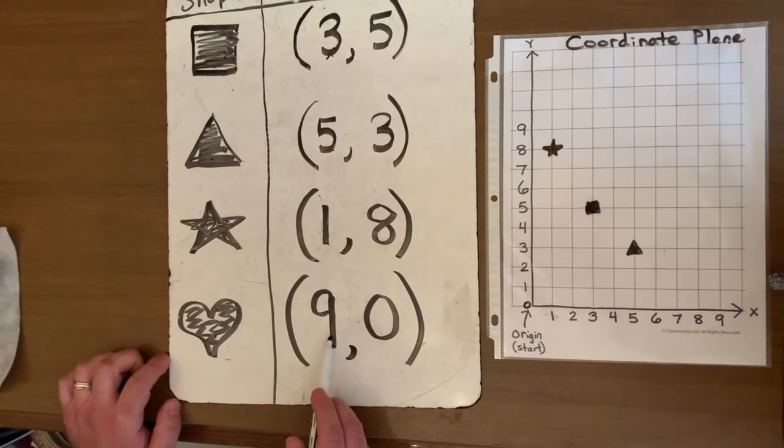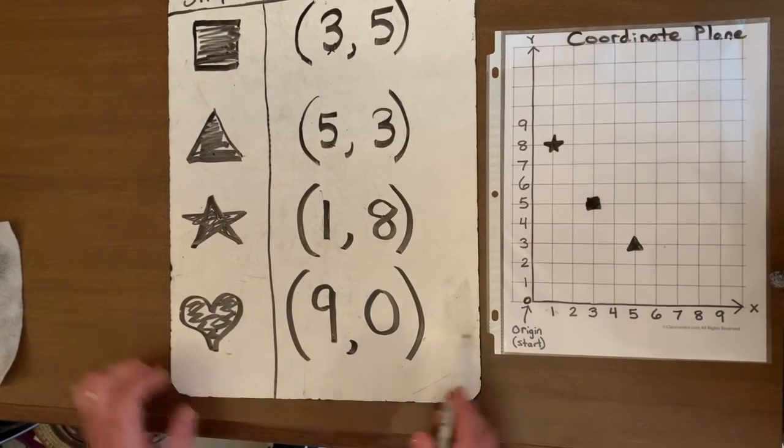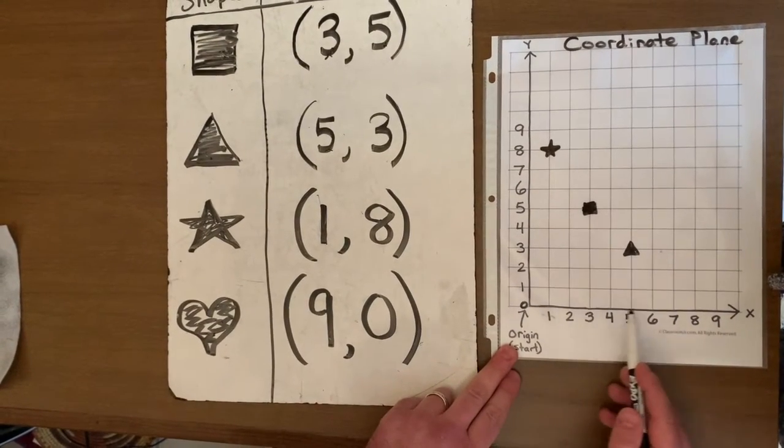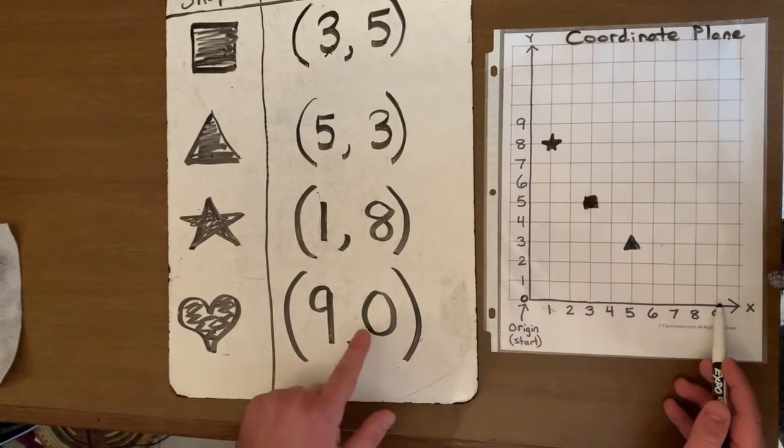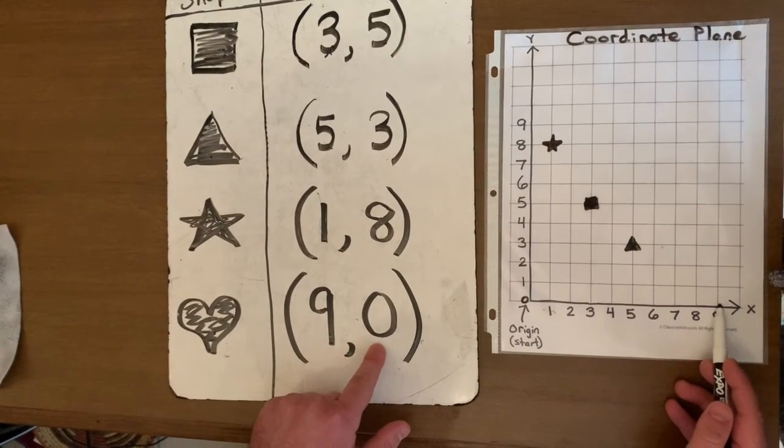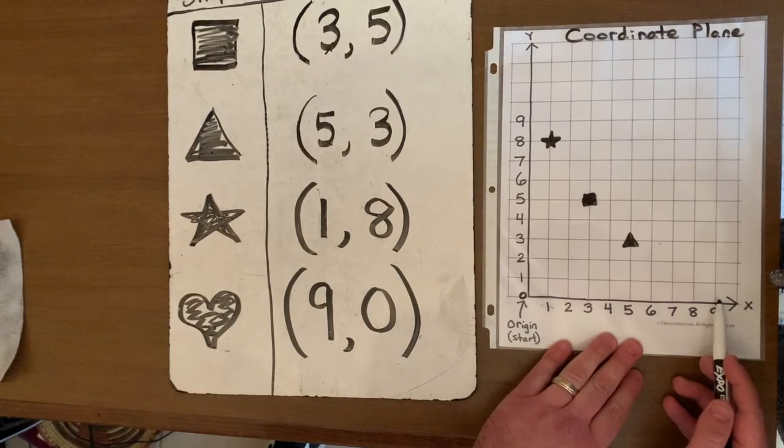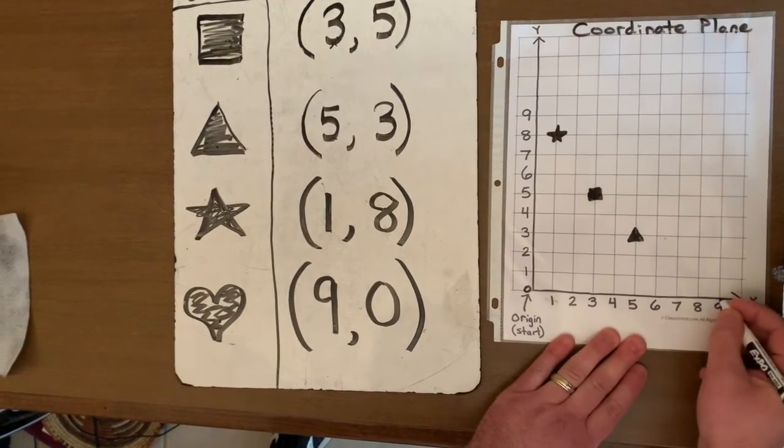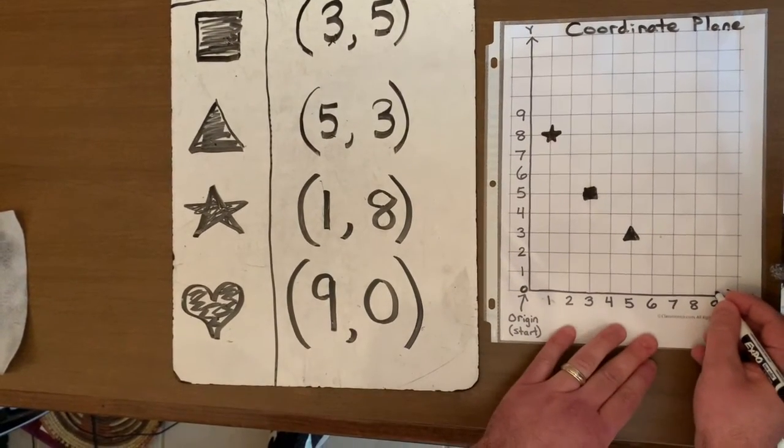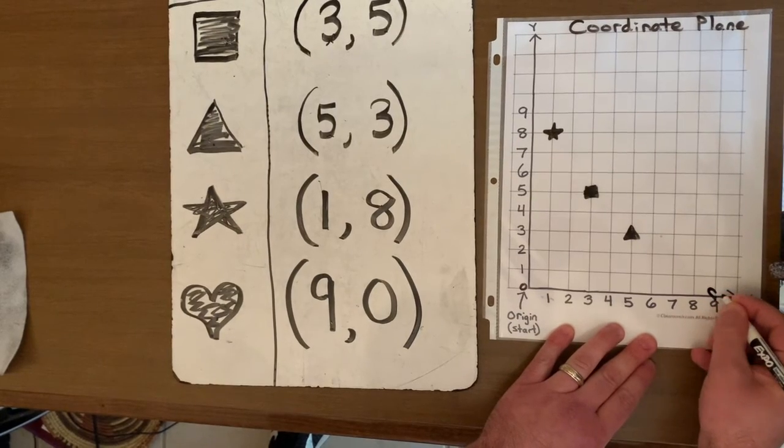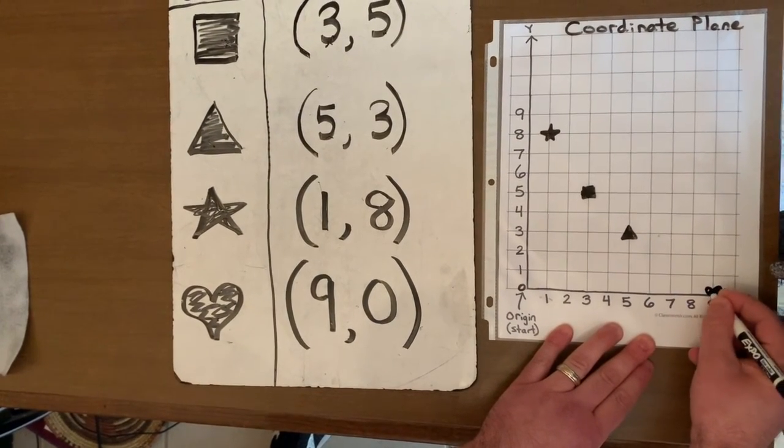So remember I'm going to the right nine places—positive nine. One, two, three, four, five, six, seven, eight, nine. Now here I have a zero. Well the zero tells me that it's not going to go anywhere up on the y-axis. So my heart is just going to go nine to the right and it's going to stay right there on the x-axis. So my little heart sits right there on the x-axis.